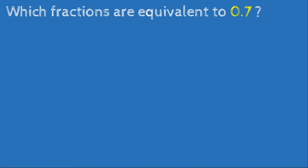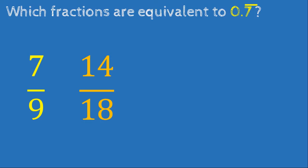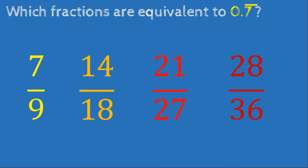Which fractions are equivalent to 0.7 continuous? We know that 7 over 9 equals 0.7 repeating. Using equivalent fractions: 7×2=14 and 9×2=18, giving 14 over 18. Continuing: 7×3=21 and 9×3=27, giving 21 over 27. And 7×4=28 and 9×4=36, giving 28 over 36. All of these are equivalent to 0.7 continuous.